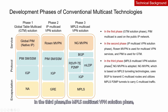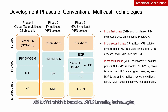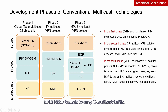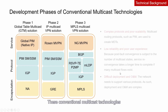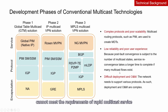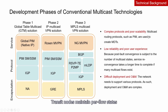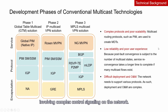In the third phase, the MPLS multicast VPN solution phase, NG MVPN is adopted. NG MVPN, which is based on MPLS tunneling technologies, uses BGP to transmit C-multicast routes and utilizes MPLS P2MP tunnels to carry C-multicast traffic. These conventional multicast technologies cannot meet the requirements of rapid multicast service development. First, complex protocols and poor scalability: transit nodes maintain per-flow states and use multicast routing protocols to create MDTs, involving complex control signaling on the network.